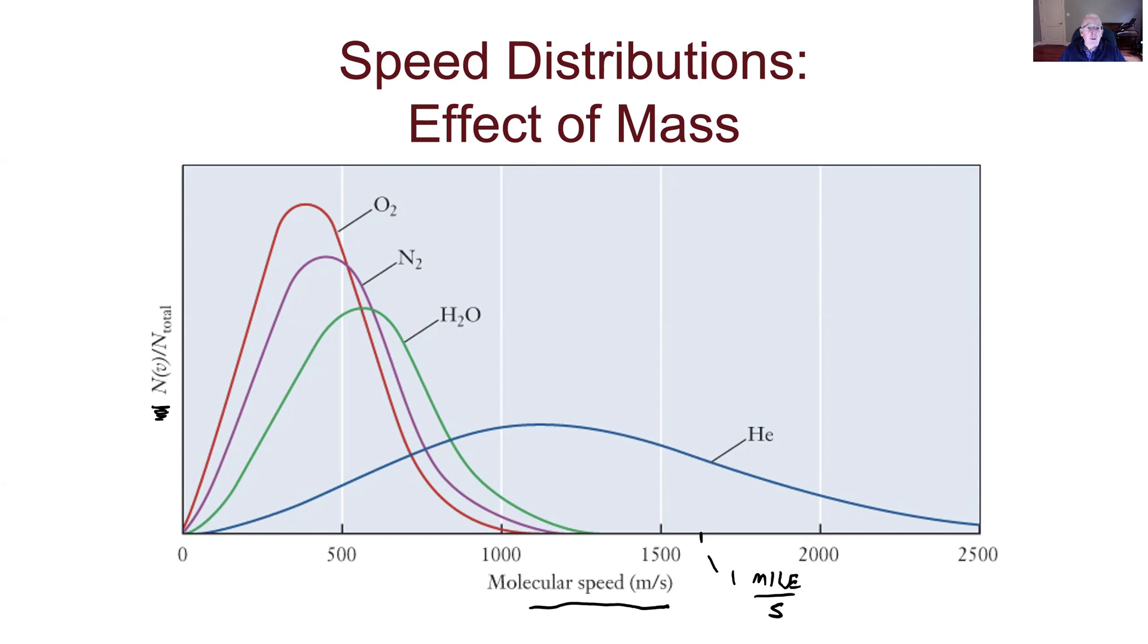Molecules are pretty fast. As a reference point, 1,609 meters is a mile. So somewhere right around here is one mile per second, just to prove that these things are going at a pretty good clip. What do we see? We see that as I go from oxygen to nitrogen to water to helium, my molecules are getting lighter. If I think about molar masses, oxygen is 32, nitrogen is 28, water is 18, helium down here is about 4. And so that shows me that as my molar mass decreases, the peak, the maximum in my distribution is going out towards higher speeds. The molecules are getting faster.